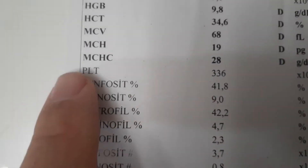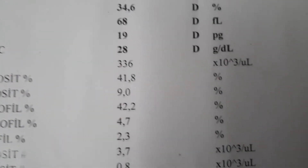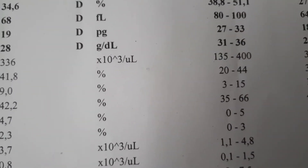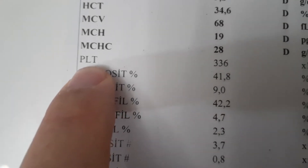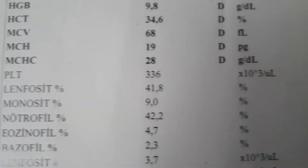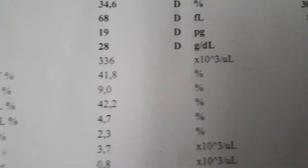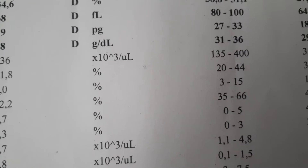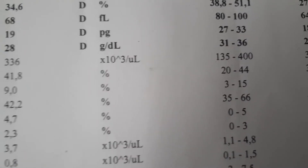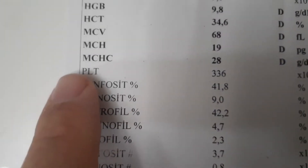PLT means platelet. Platelets are the cells that first respond to form a plug when there is bleeding or an incision in our body. A low PLT level may result in bleeding risk. Platelets decrease in bone marrow diseases, aplastic anemia, some bone marrow cancers, B12 or folic acid deficiency, long-term alcohol consumption, blood poisoning, blood transfusions, chronic diseases, chemotherapy, radiotherapy, viral infections, pregnancy, and especially some autoimmune diseases like ITP and TTP.